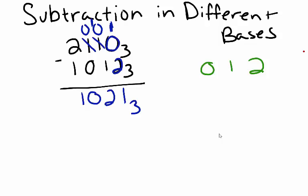So, 2, 1, 1, 0, base 3, minus 1, 0, 1, 2, base 3, equals 1, 0, 2, 1 in base 3.